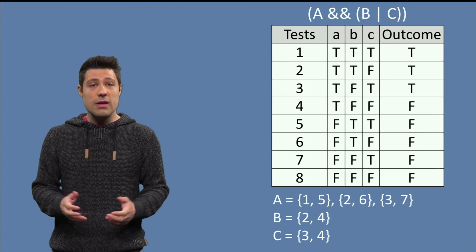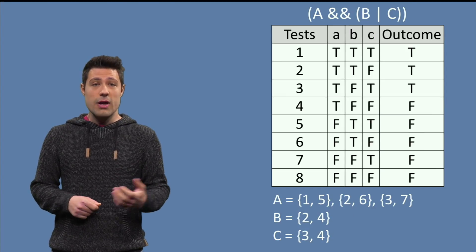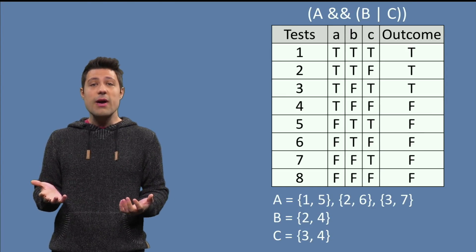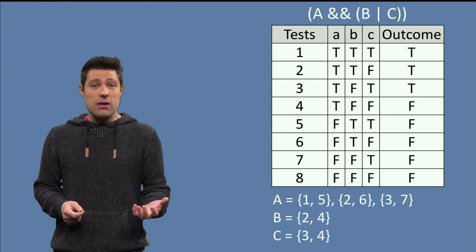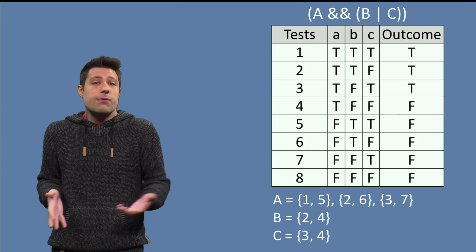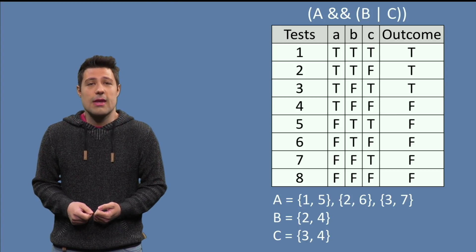Now, if we see all the tests we should do, we have for A three options, test 1 and 5, 2 and 6, and 3 and 7. For B, the only option is 2 and 4, and for C, 3 and 4.